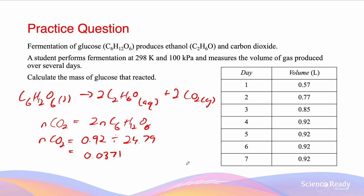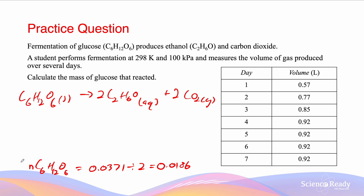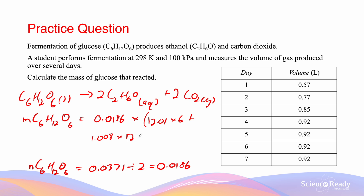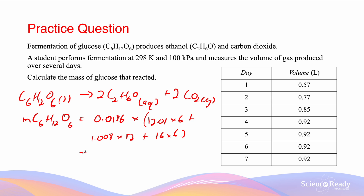From the balanced equation, CO2 is produced from glucose in a 2:1 ratio, so the number of moles of glucose = 0.0371 / 2 = 0.0186 moles. The mass of glucose C6H12O6 = 0.0186 × (12.01 × 6 + 1.008 × 12 + 16 × 6) = 3.3 grams, to two significant figures.